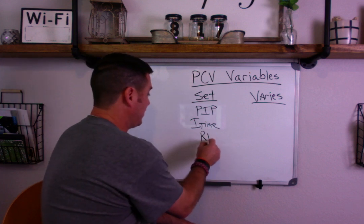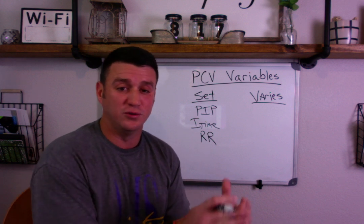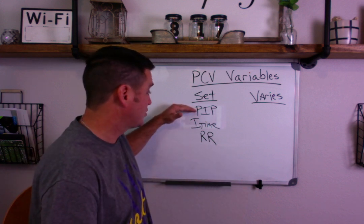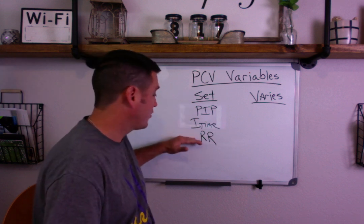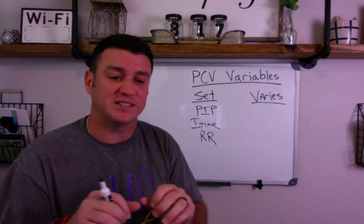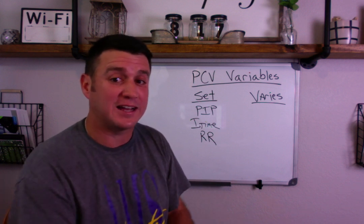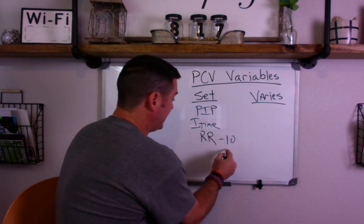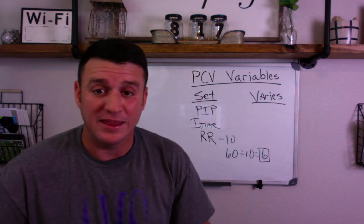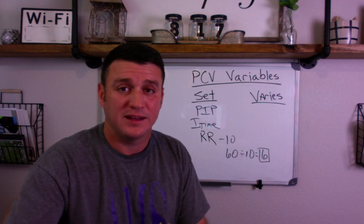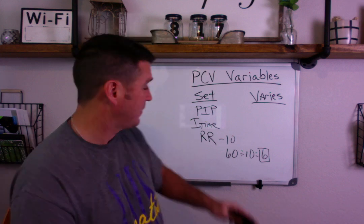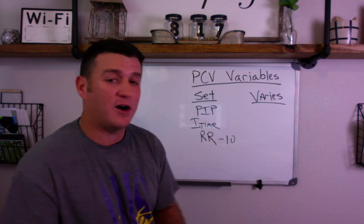The next thing we set is respiratory rate. This tells the vent how often to give a breath. If you set the vent on a respiratory rate of 10, then it's going to give the set peak inspiratory pressure and hold it for the set I-time however often you tell it to. So if your respiratory rate is 10, then 60 seconds divided by 10 breaths per minute equals a breath every 6 seconds. That actually sets your total cycle time. This may vary if your patient is breathing above the set rate, depending on if you're in AC or SIMV — but that's another video.